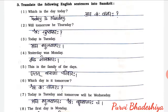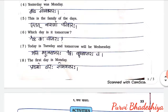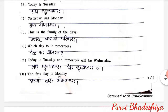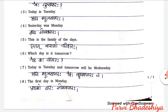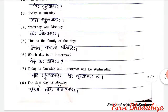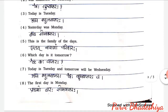5. This is the family of the days. Etat Varaanam Parivaraha. 6. Which day is it tomorrow? Swaha Kaha Vasaraha. 7. Today is Tuesday and tomorrow will be Wednesday. Adhyah Mangal Vasaraha. Swaha Budhu Vasaraha. Cha.